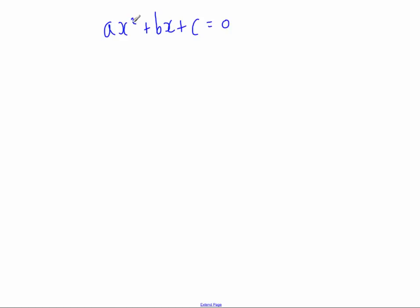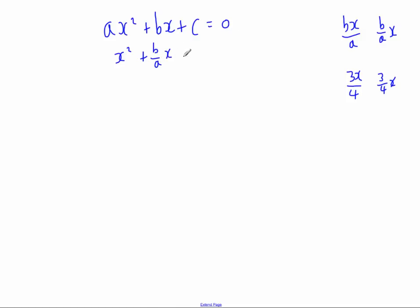So ax squared divided by a is just x squared, plus bx divided by a. Now you could write bx over a, but instead you could write b over a times x — just like if I had 3x divided by 4, I could write 3x over 4 or three-quarters x. So I'm writing b over a times x, plus c divided by a, and that equals zero.